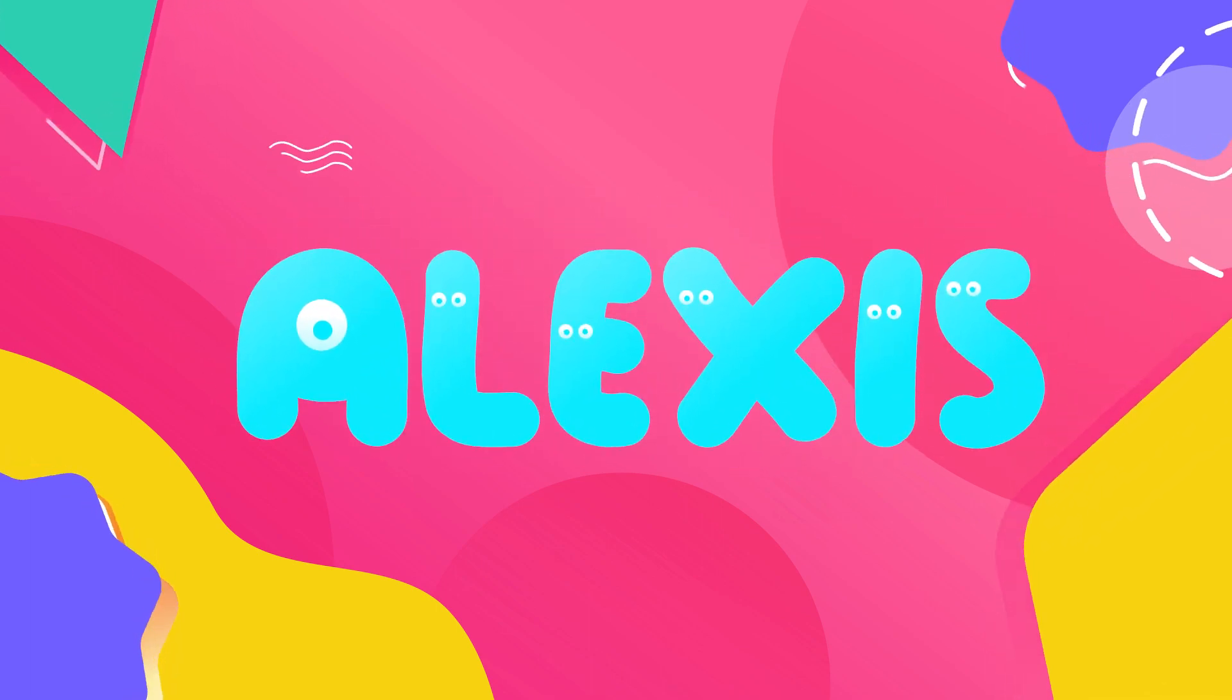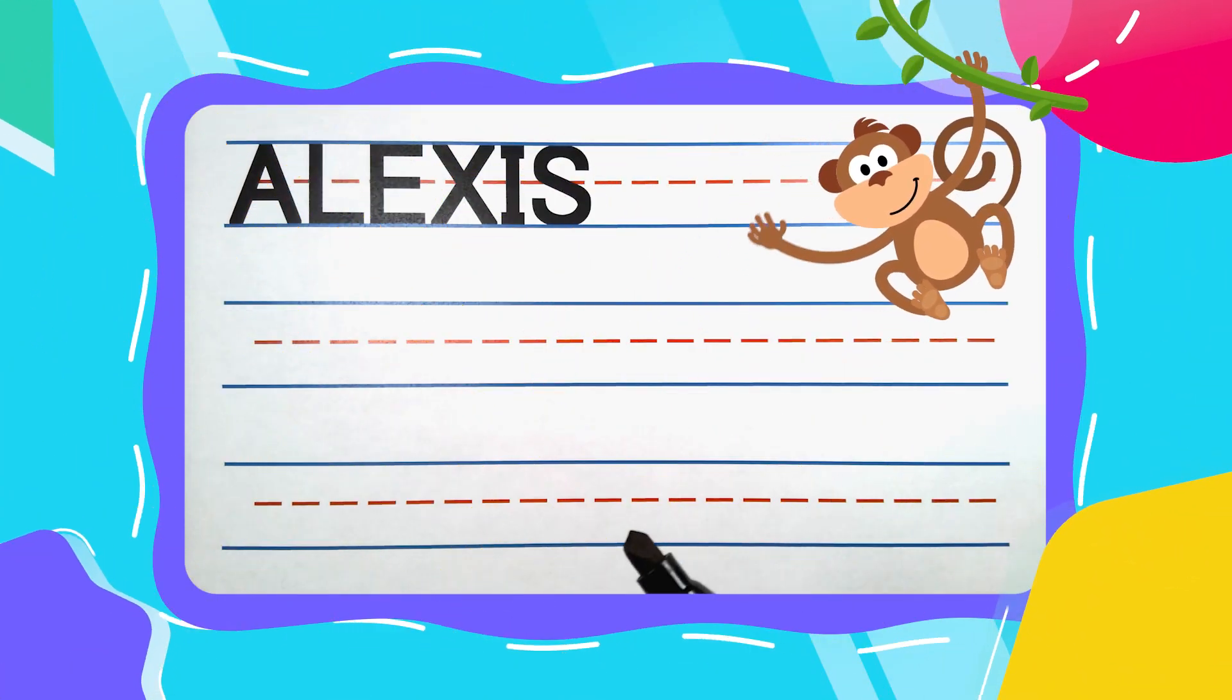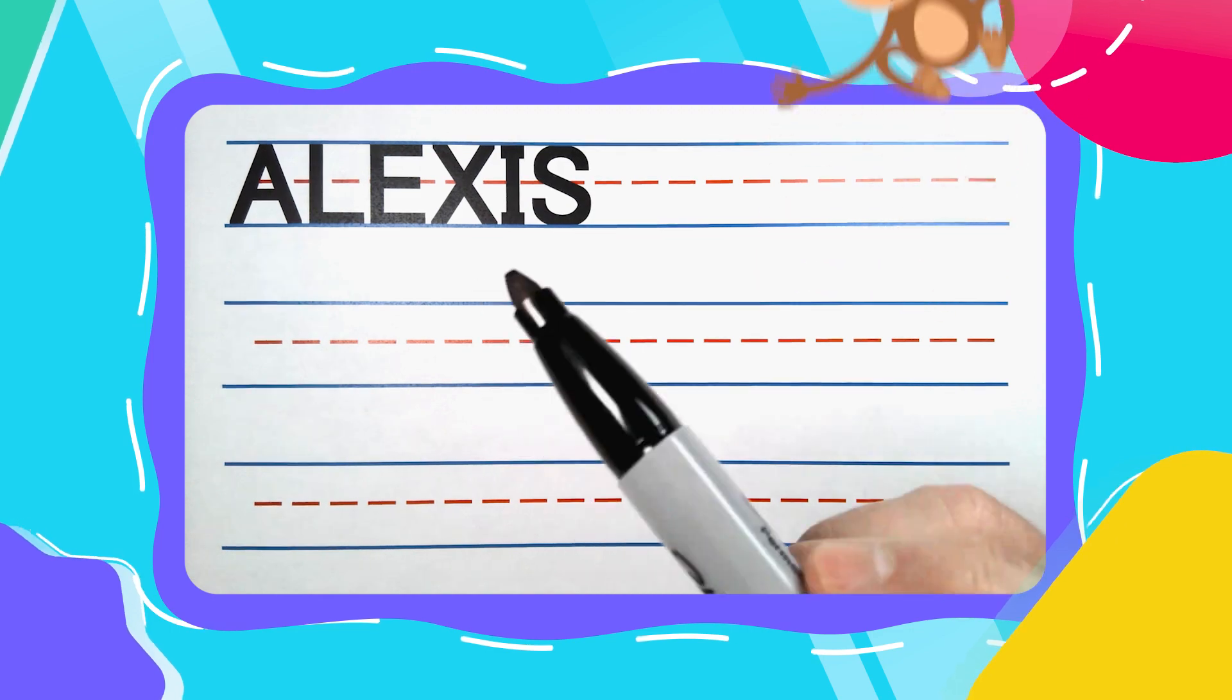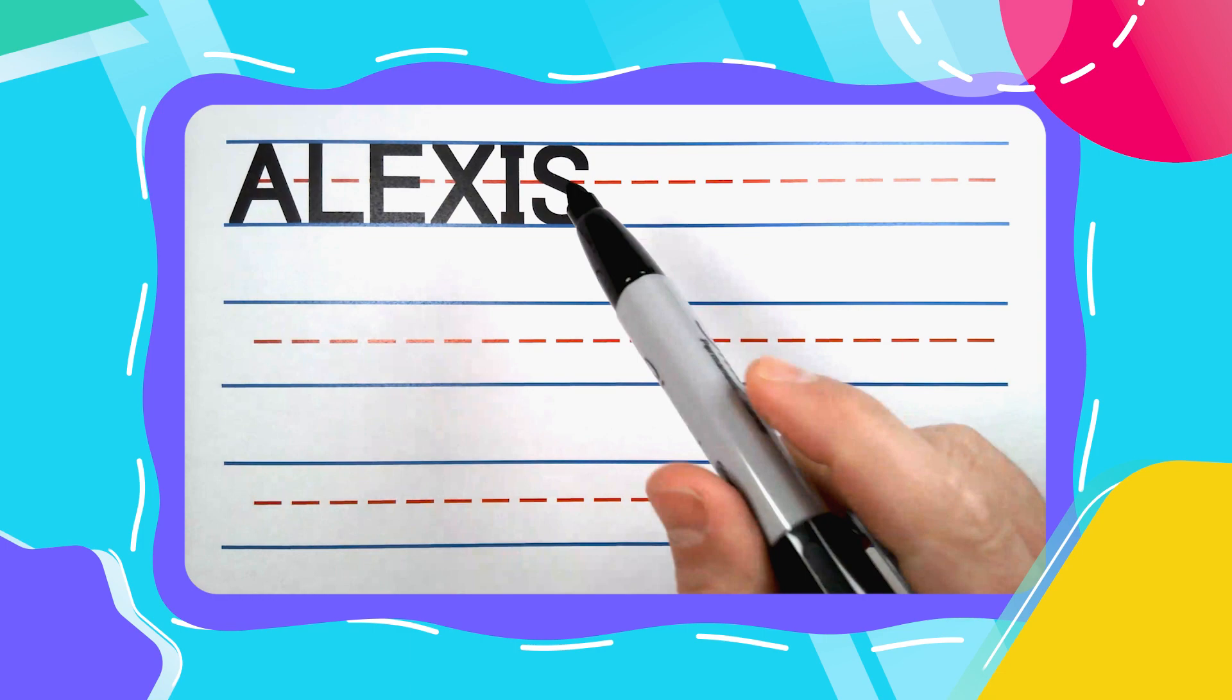Today, we're going to write the lovely name, Alexis. If your name is Alexis, you've got an awesome name! Alexis is spelled A-L-E-X-I-S.